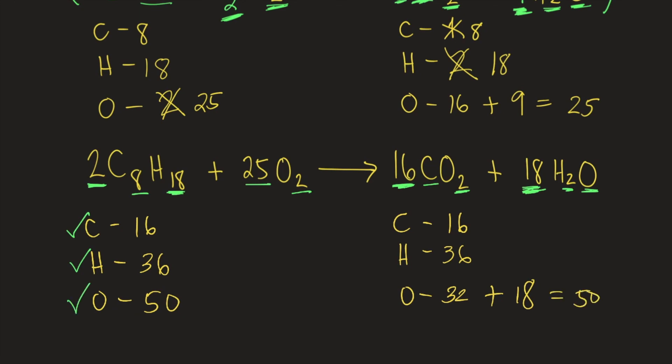So the balanced equation for the complete combustion of octane is this one. 2C8H18 plus 25O2. The products are 16CO2 and 18H2O.